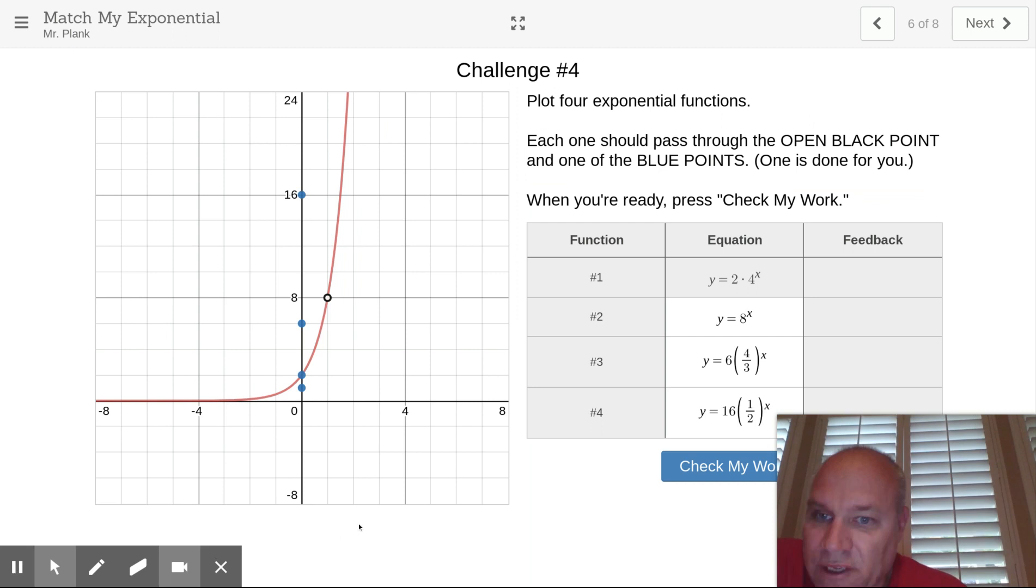Challenge 4 looks like a doozy here. So the first one they gave us is y equals 2 times 4 to the x. And that makes sense because 2 is the y-intercept. Again, this is scaled by 2s. So this is scaled by 2. And then if you go 4 to the x, for 1 it's going to be 4. 4 times 2 gets you to 8.